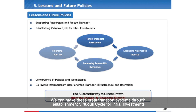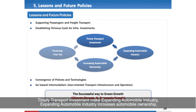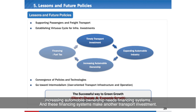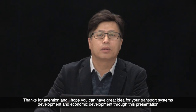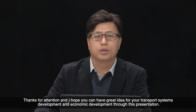Korea achieved these great transport systems through establishment of a virtuous circle for infrastructure investment: timely transport investment expanding the automobile industry, increasing automobile ownership, which drives the need for financial systems, and those financial systems enabling further transport investment. Thank you for your attention, and I hope you can gain great ideas for your transport system development and economic development through this presentation. Thank you.